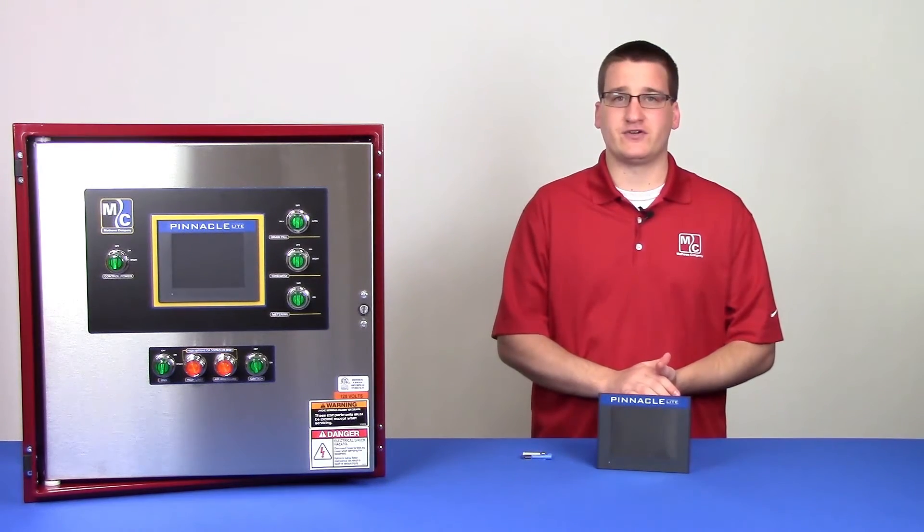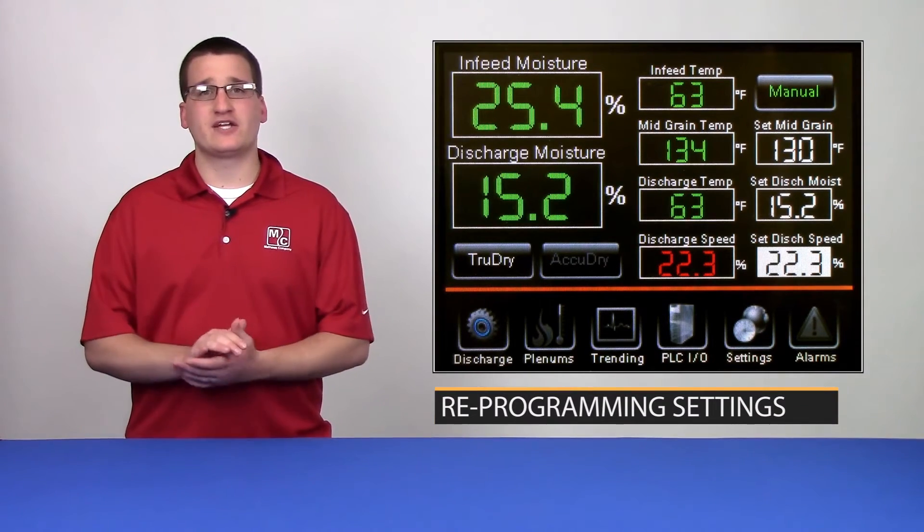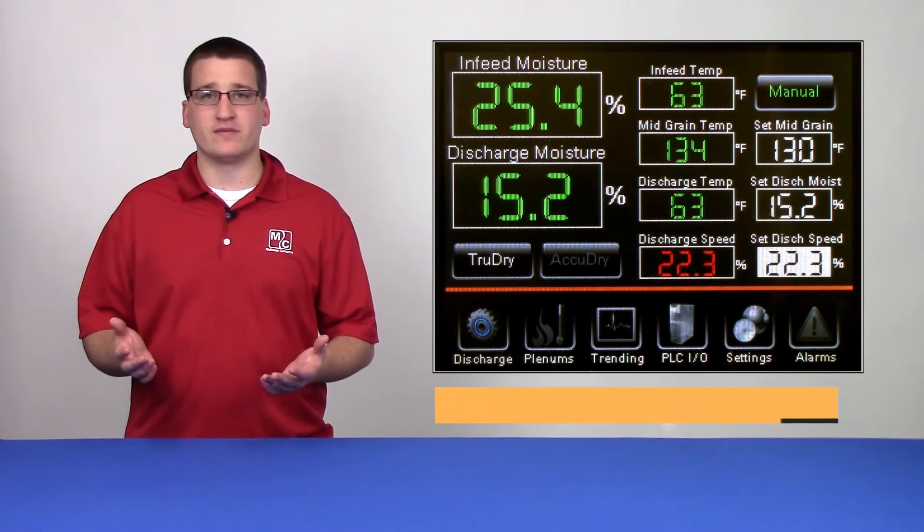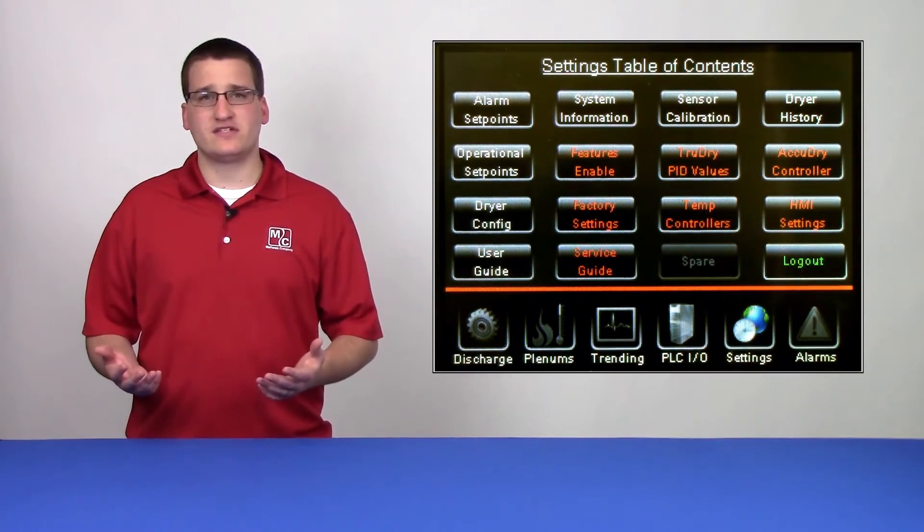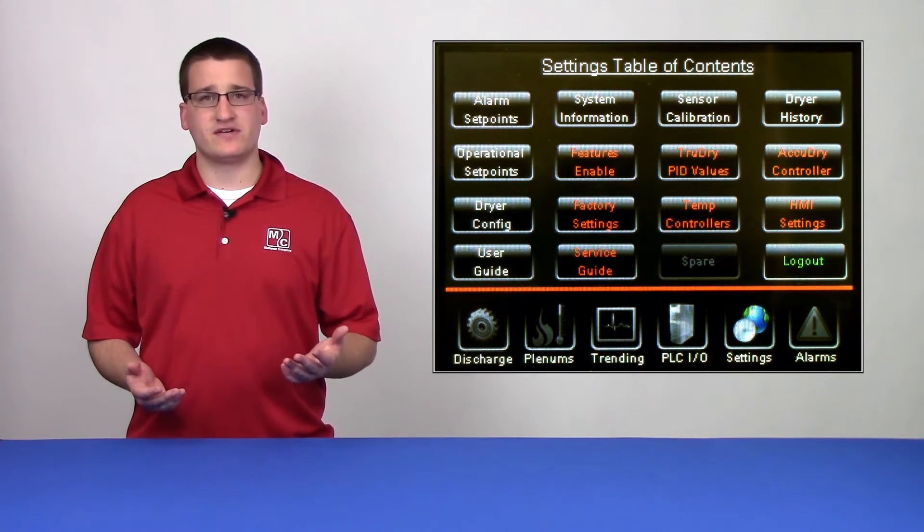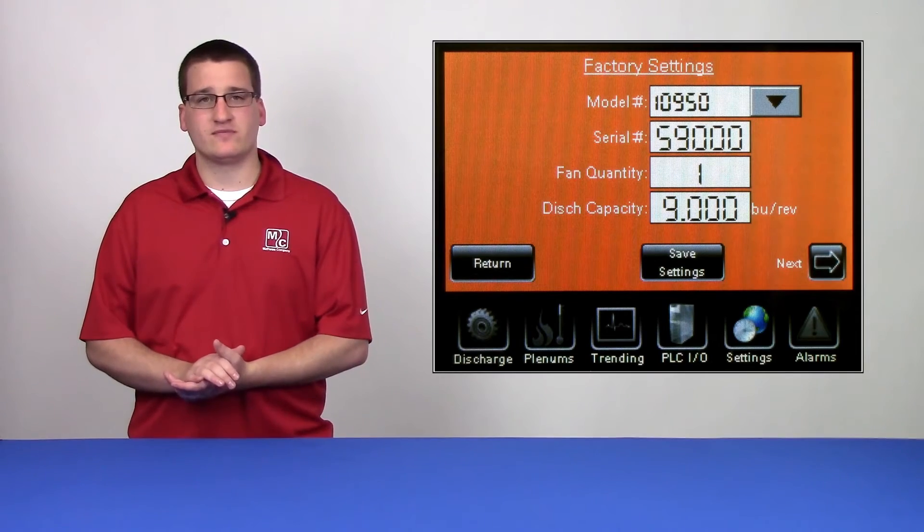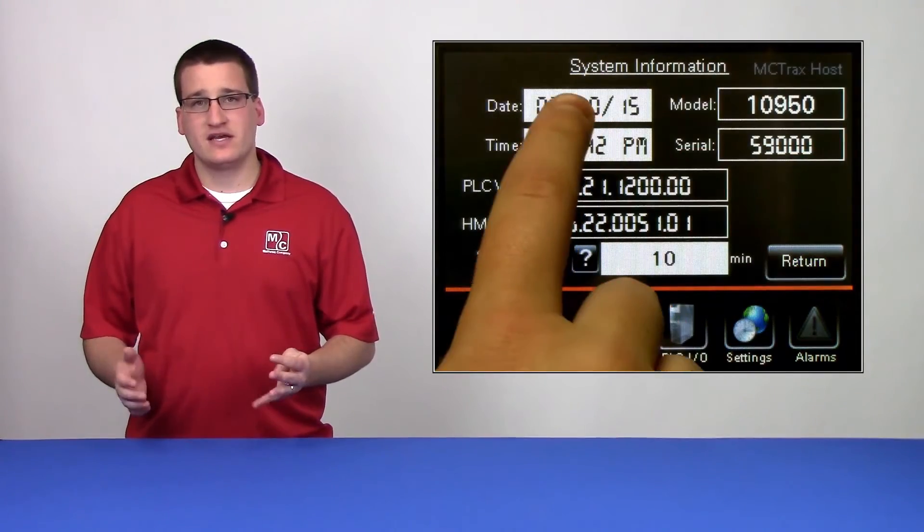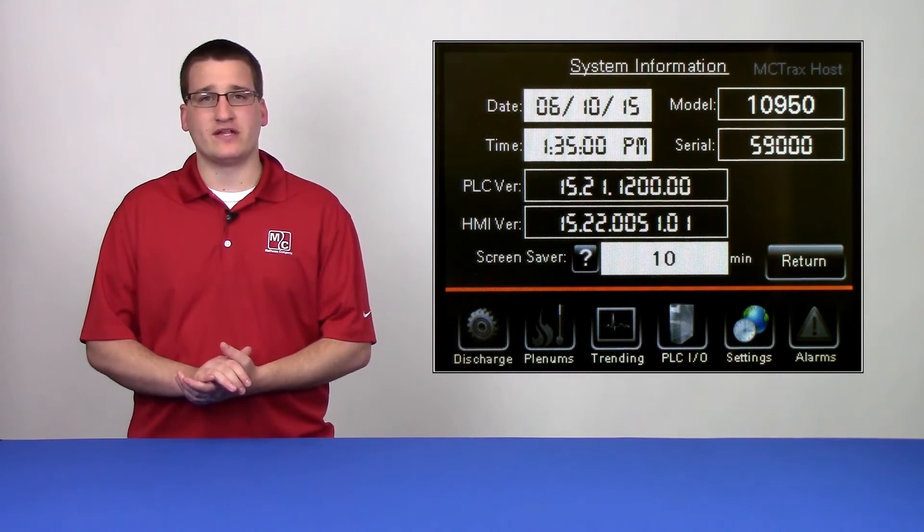It's very important not to forget to reset your factory settings after doing a software update. This will require a service login. Some of the things you want to look for are your model and serial number. Make sure they're entered correctly so you have the right holding volumes. Your date and time should be corrected. This helps with MC Tracks to make sure that we're matching up the right data with the right time.